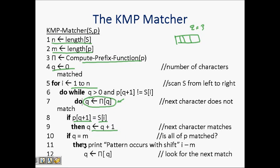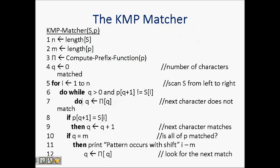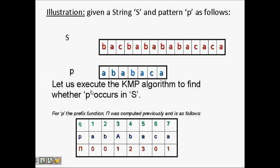If q equals m, our pattern has matched. Then we make q equal to pi[q] to shift again and match more occurrences, because we want more than one pattern match to be found. Next, let's look at an example that will make this clear.